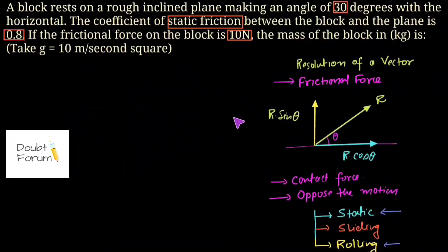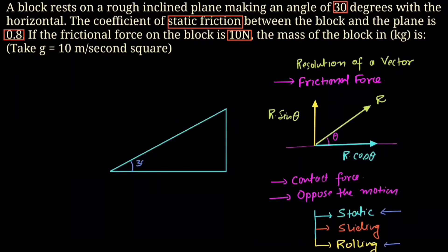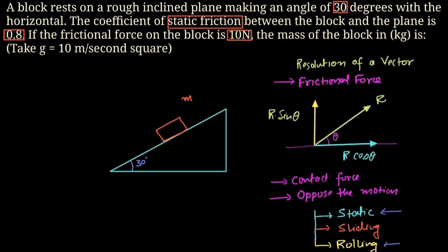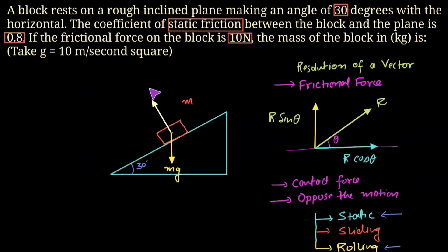Now let's move back to the question. There is a plane making an angle of 30 degrees from the horizontal, and on this plane there is a block of mass m. On this block several forces act. The weight mg acts downward, and because there is contact between the surface and the block, the surface creates a normal force N perpendicular to the plane. We can resolve mg into two components.